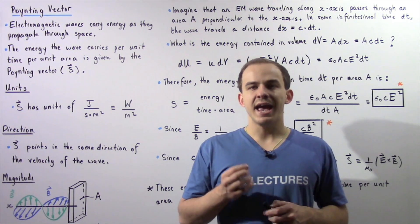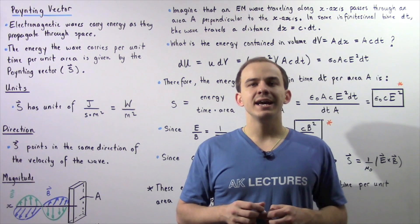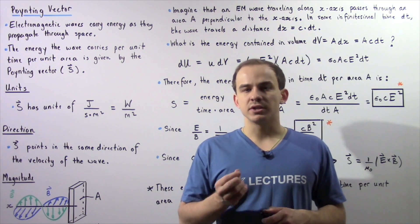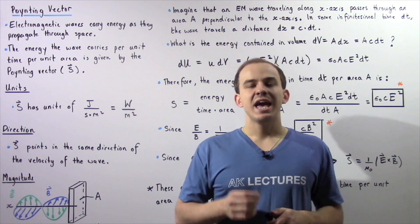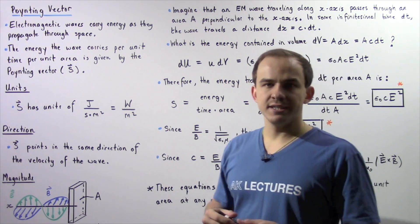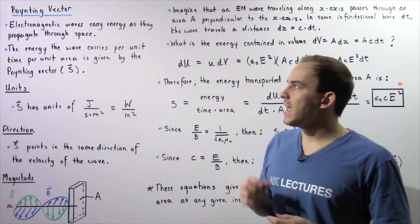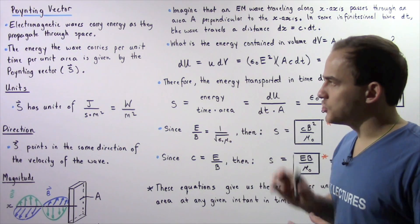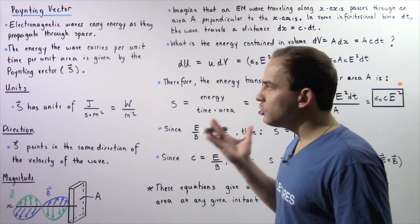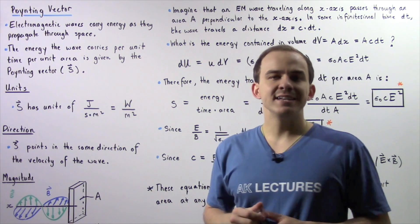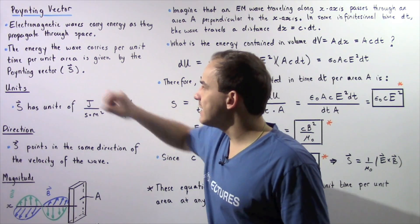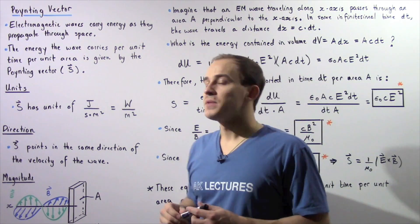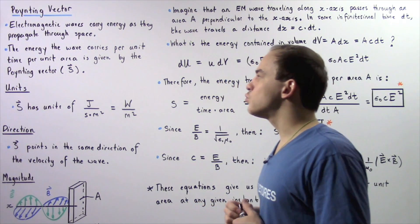In the previous lecture, we discussed the energy density carried by an electromagnetic wave when it propagates through space. Now we're going to discuss a similar concept known as the Poynting vector, named after British physicist John Henry Poynting. The Poynting vector gives the energy that an electromagnetic wave carries per unit time, per unit area, and is represented by an uppercase S with a vector symbol on top. It has both magnitude and direction.